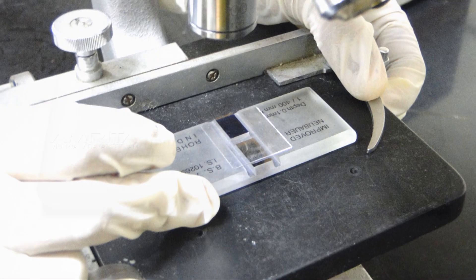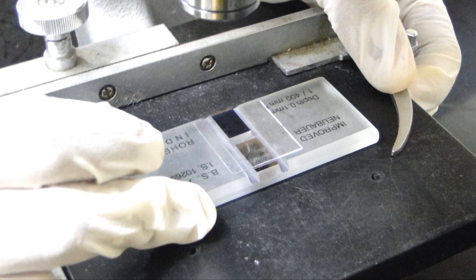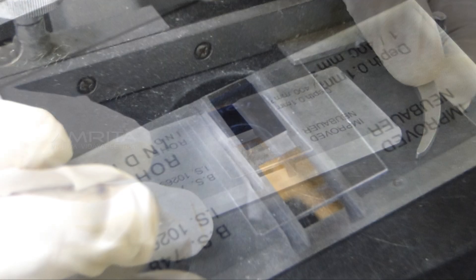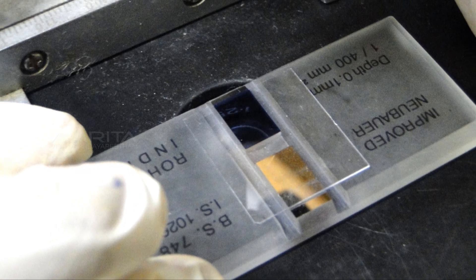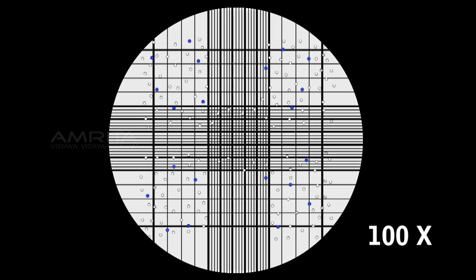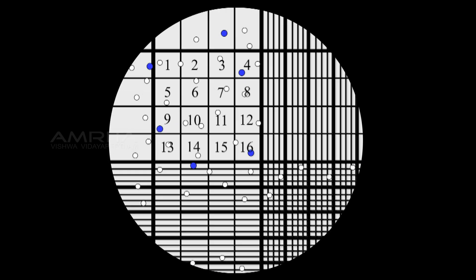Now observe under phase contrast microscope at 10x. Now view the cells under a microscope at 100x magnification. Under the microscope you should see a grid of 9 squares. Focus the microscope on one of the 4 outer squares in the grid. The square should contain 16 smaller squares.